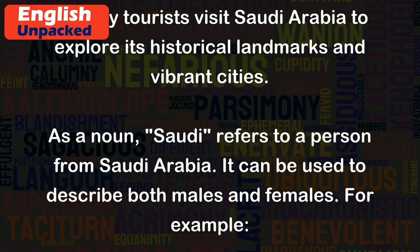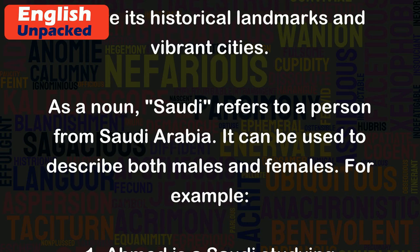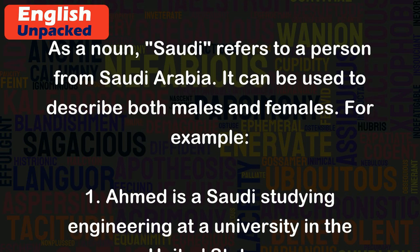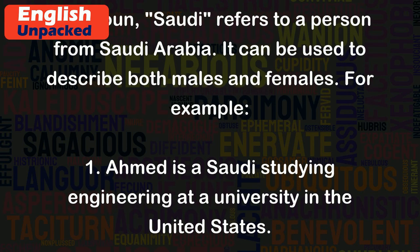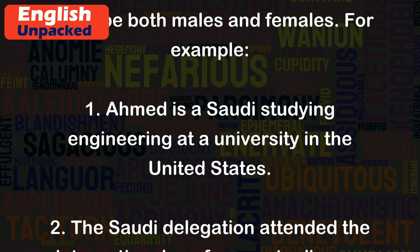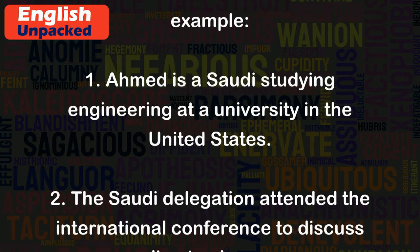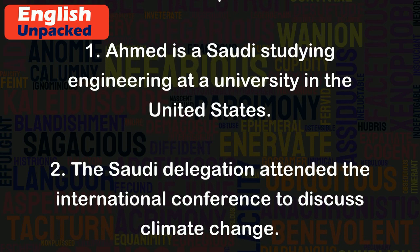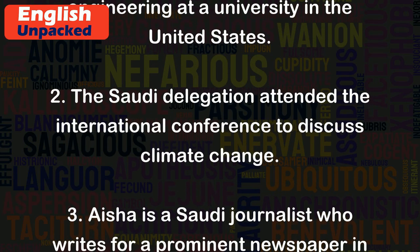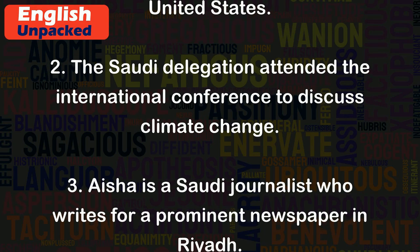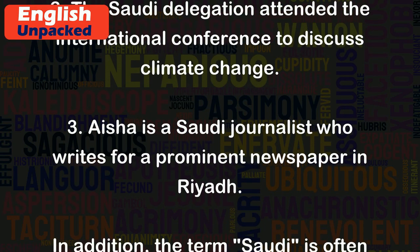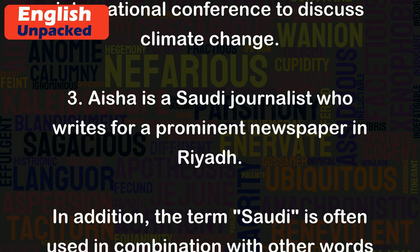As a noun, Saudi refers to a person from Saudi Arabia. It can be used to describe both males and females. For example: 1. Ahmed is a Saudi studying engineering at a university in the United States. 2. The Saudi delegation attended the international conference to discuss climate change. 3. Aisha is a Saudi journalist who writes for a prominent newspaper in Riyadh.